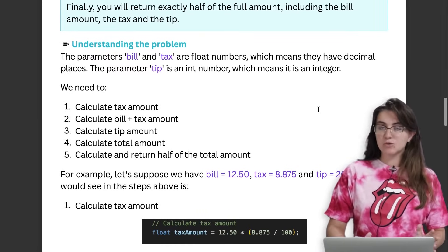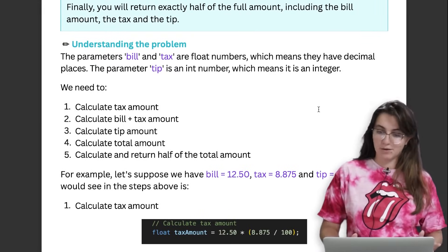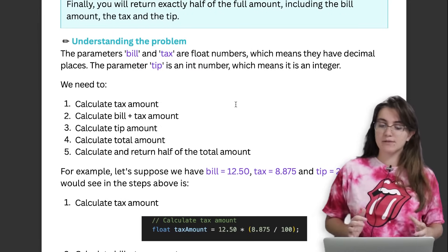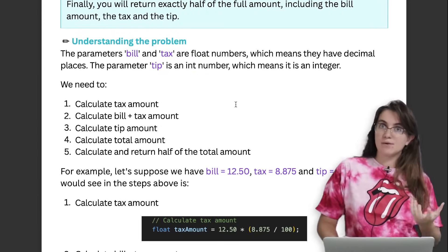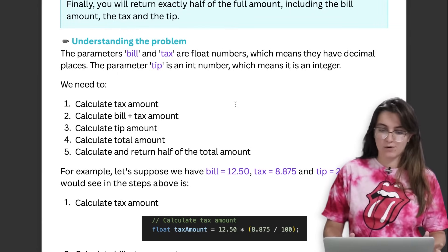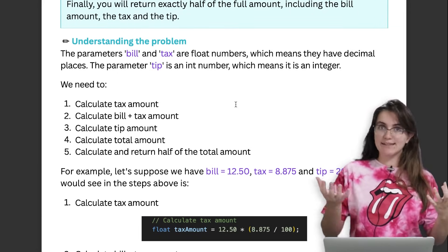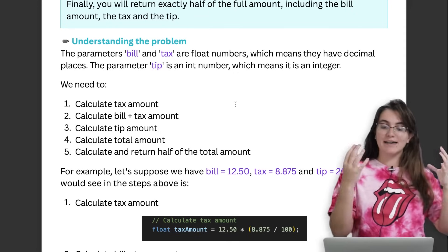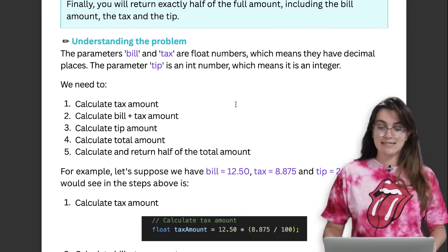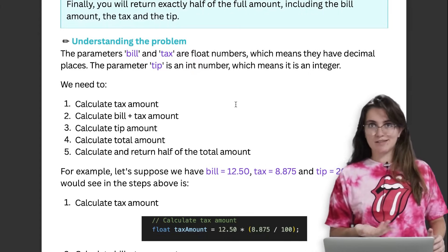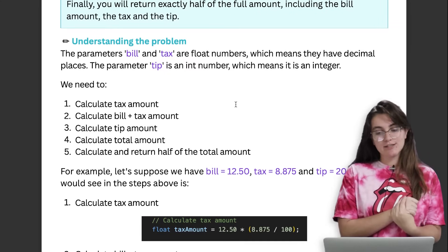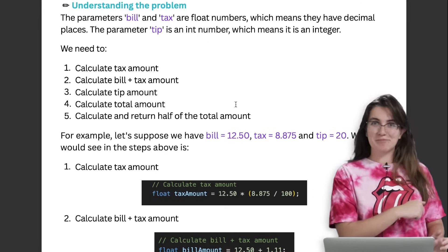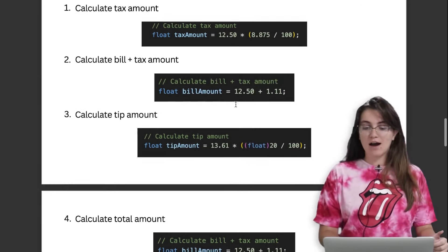Let's understand the problem. We have two float parameters — bill and tax — and an integer parameter for tip. We need to: first, calculate the tax amount as bill times (tax / 100); then add the tax amount to the bill to get the full bill value; then calculate the tip amount as bill_amount times (tip / 100); then calculate the total by adding the tip amount to the bill amount; and finally return half of the total amount.